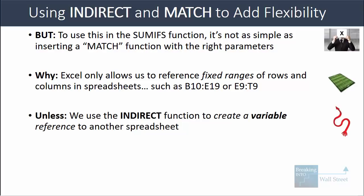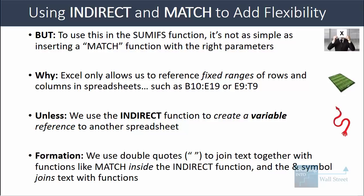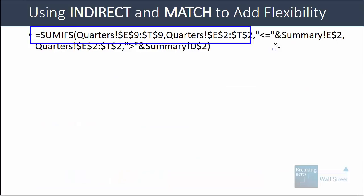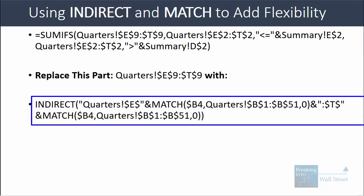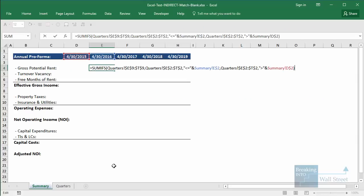Instead, you have to use the INDIRECT function to create a variable reference to another spreadsheet. We can use double quotes to join text together with functions such as MATCH inside the INDIRECT function, and use the ampersand to join text with functions inside it. Taking our original function with the summation range and criteria range, we can keep the last two parts the same — those dates stay fixed — but we replace the first part with: INDIRECT, then a long string building the range text using MATCH.